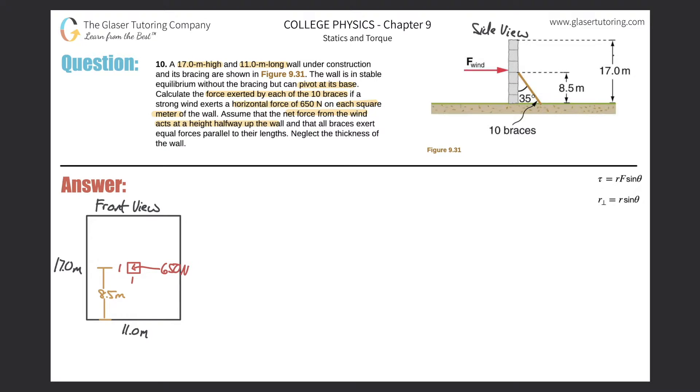We're going to have 10 of these braces. They only show one in the picture, but obviously the other nine will be right behind that front one, and they tell us a certain angle. Here I drew a front view of the wall: 17 meters high, 11 meters wide. They told us it's a 650-newton force acting on each square meter of the wall, and this is where the net force is going to act.